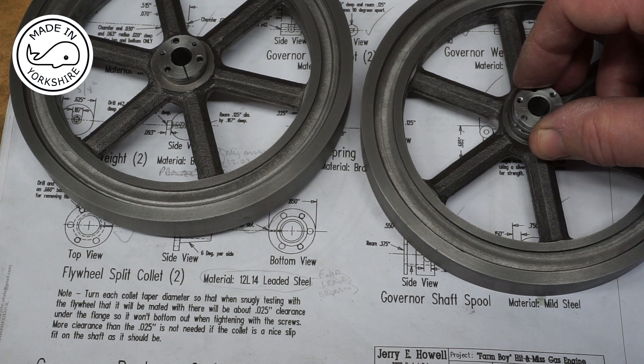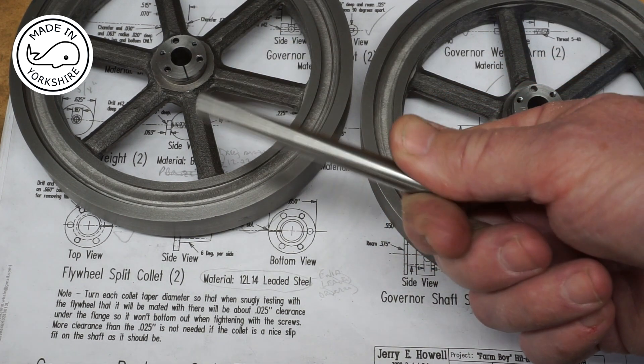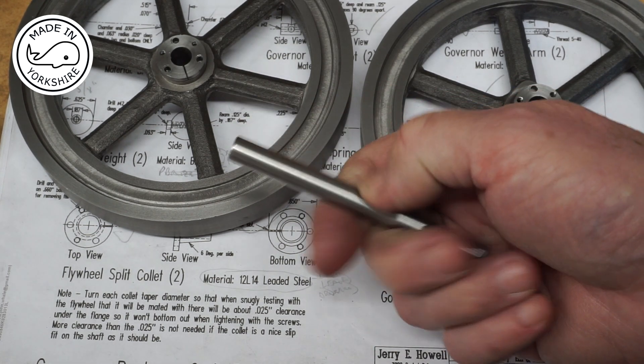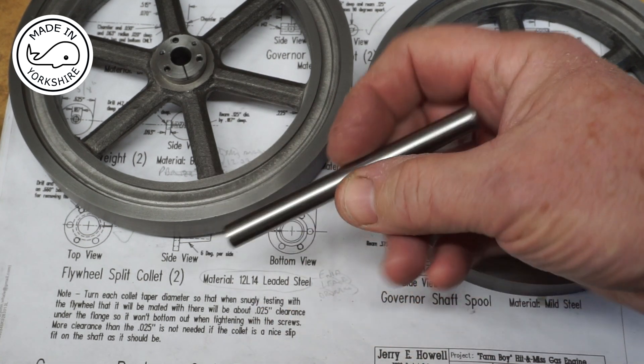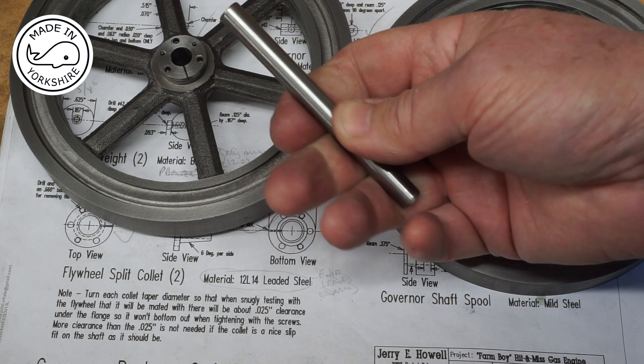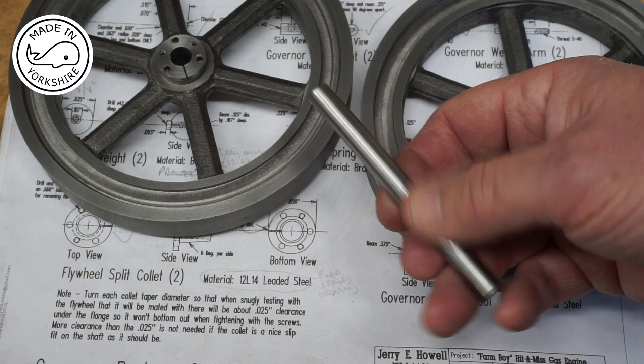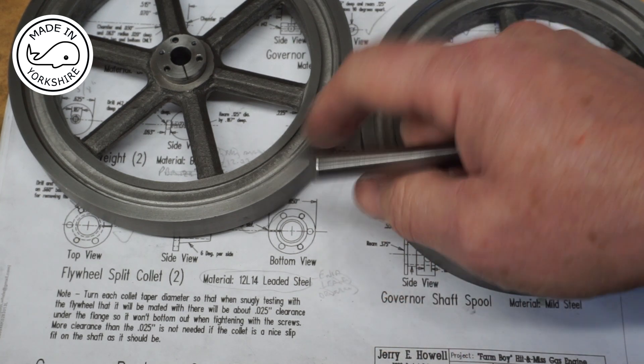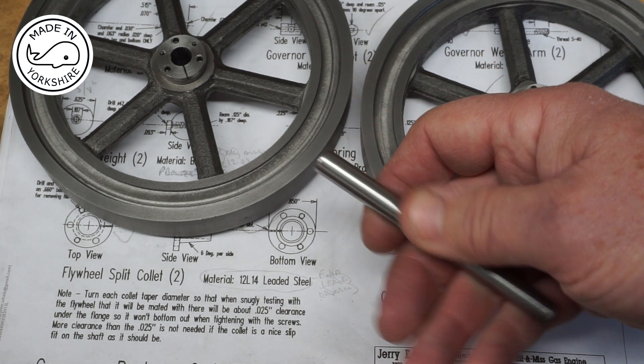So what I've decided to do is I'm going to cut a keyway on this bit of test bar. And I'm going to fit one of the flywheels on it at a time and just check for run out. And if there is any run out I'm just going to try and correct it.